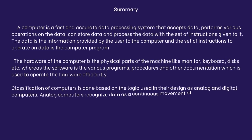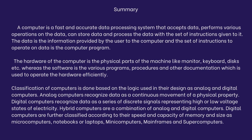Summary. A computer is a fast and accurate data processing system that accepts data, performs various operations on the data, can store data, and processes the data with a set of instructions given to it. The data is the information provided by the user to the computer. The set of instructions to operate on data is the computer program. The hardware of the computer is the physical parts of the machine like monitor, keyboard, discs, etc. Whereas the software is the various programs, procedures, and other documentation used to operate the hardware efficiently. Classification of computers is done based on the logic used in their design as analog and digital computers. Analog computers recognize data as a continuous movement of a physical property.